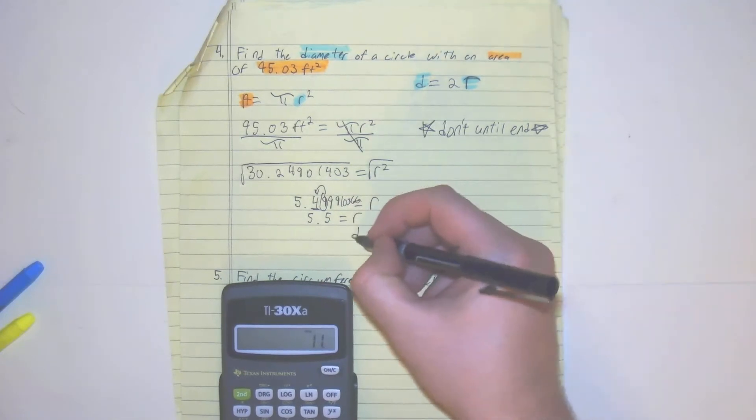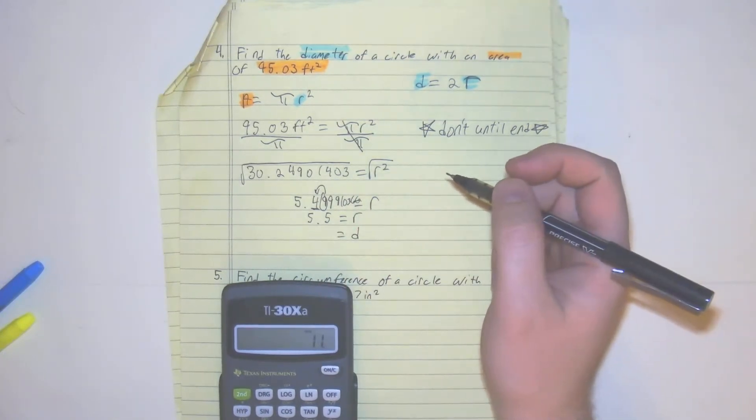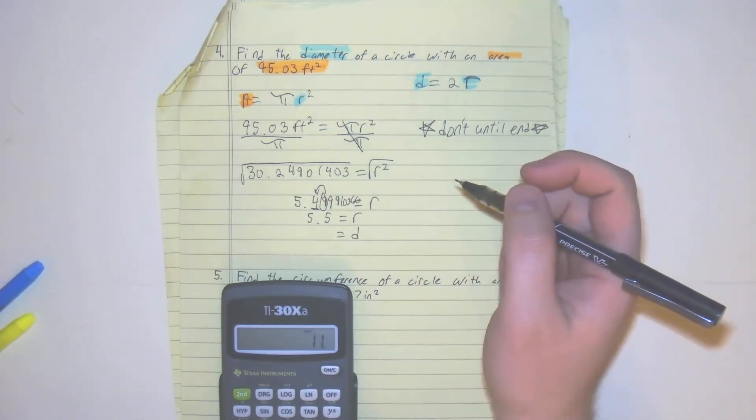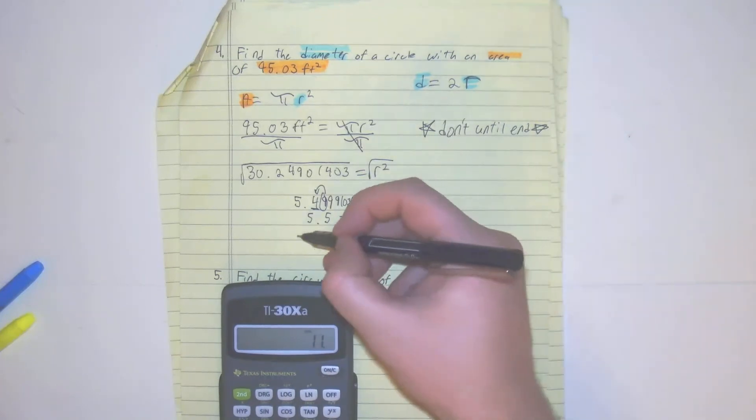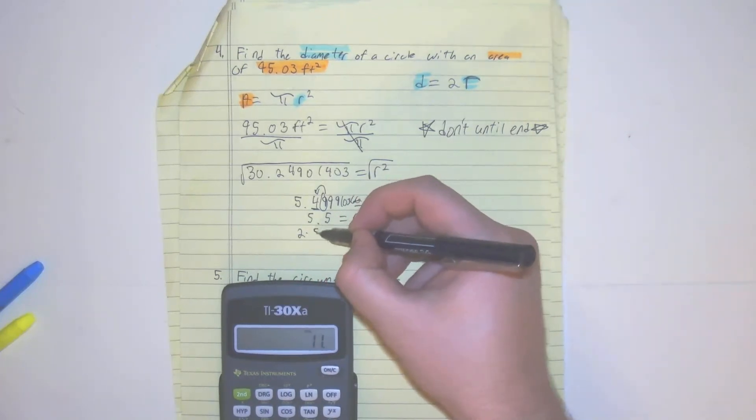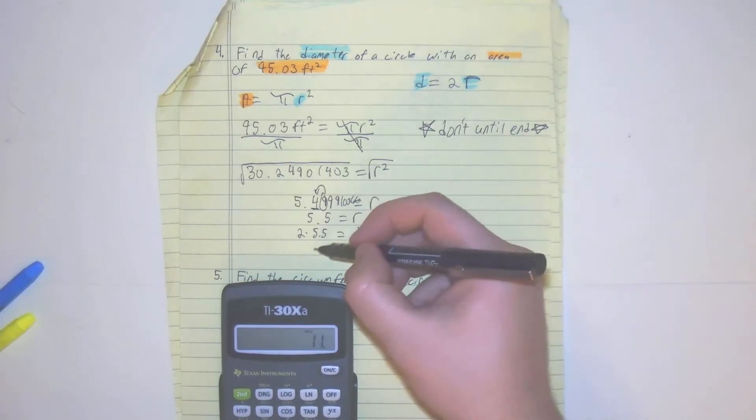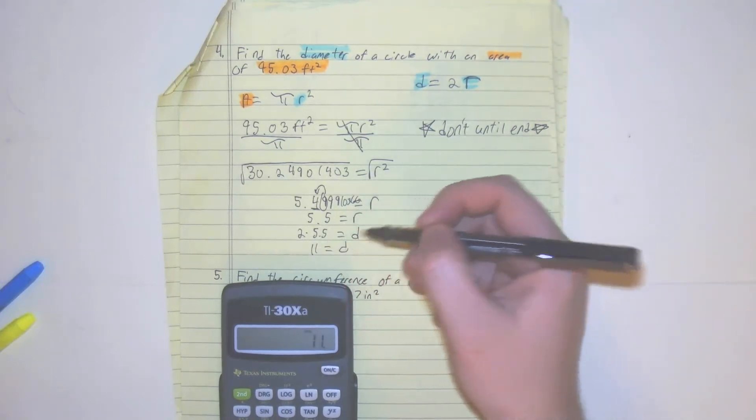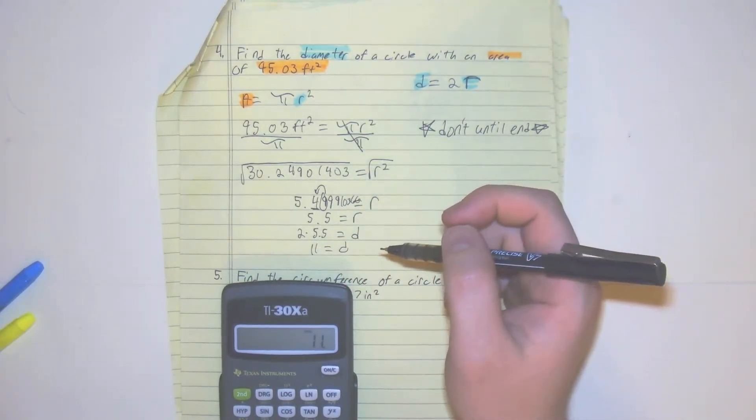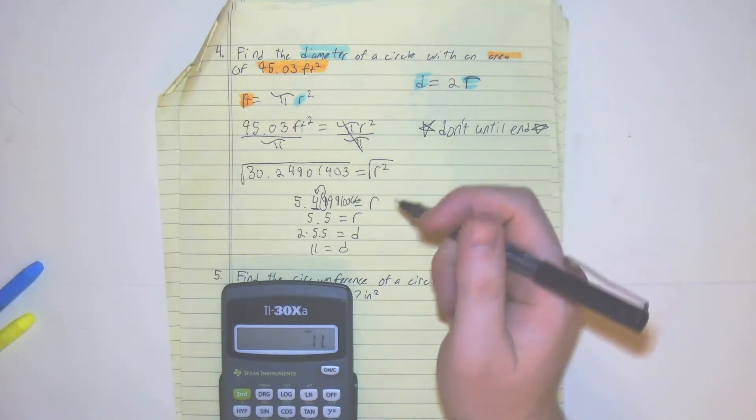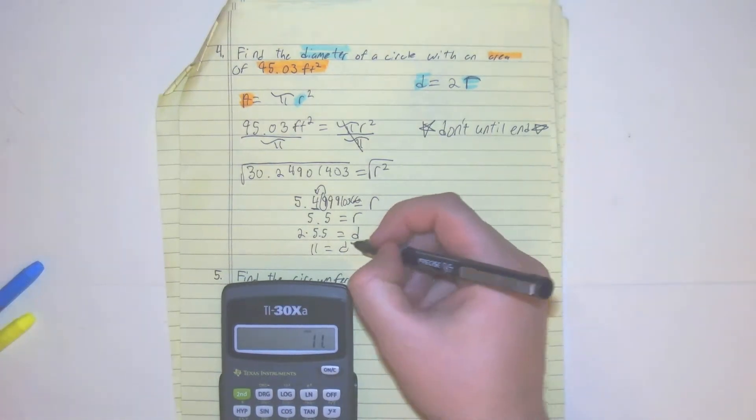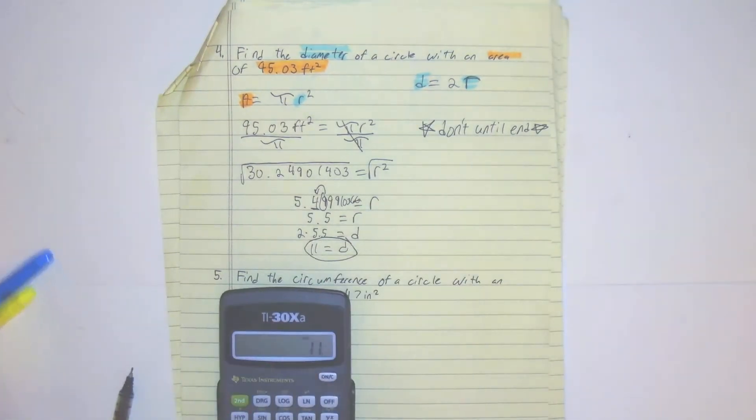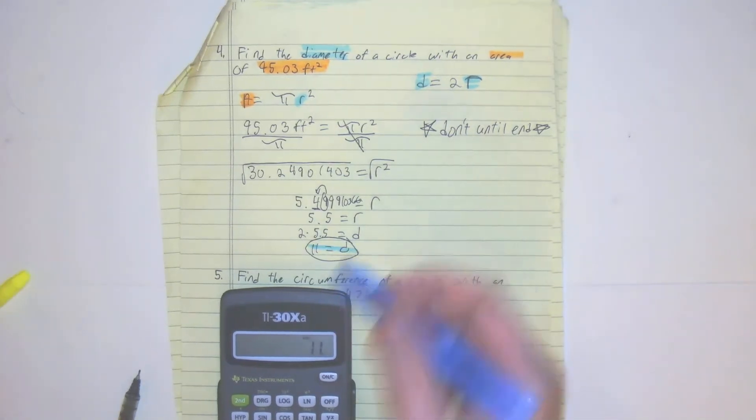You get the diameter is equal to 2 times 5.5. So then you get 11 equals d. Alright, so we get the diameter here. Our goal is 11.